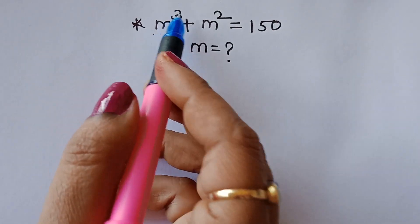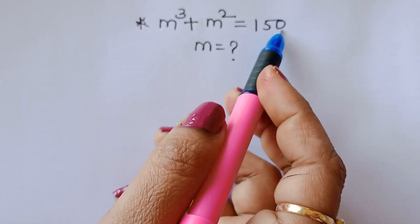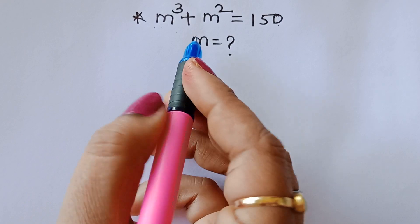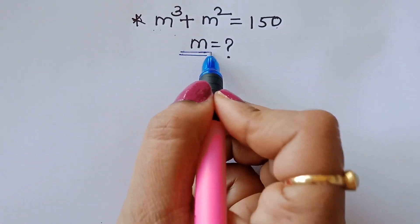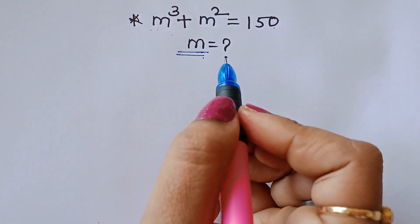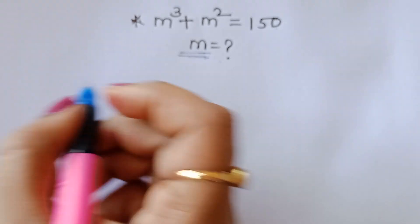The question given here is m cube plus m square is equal to 150. We have to find out the value of m here. Let's see the solution.